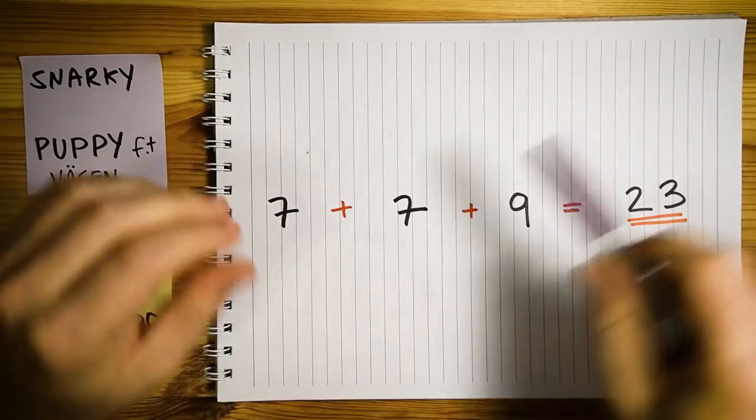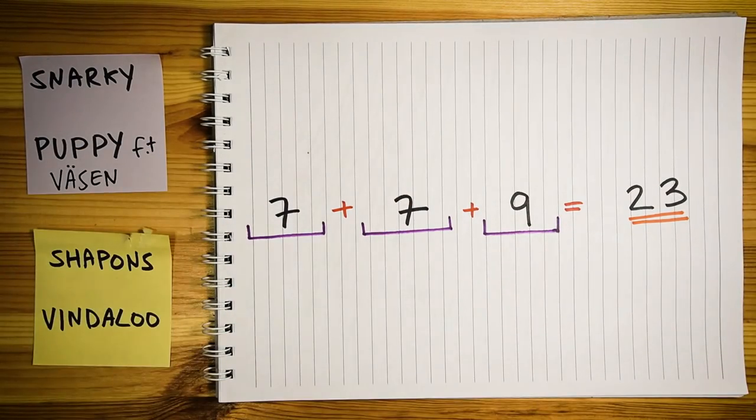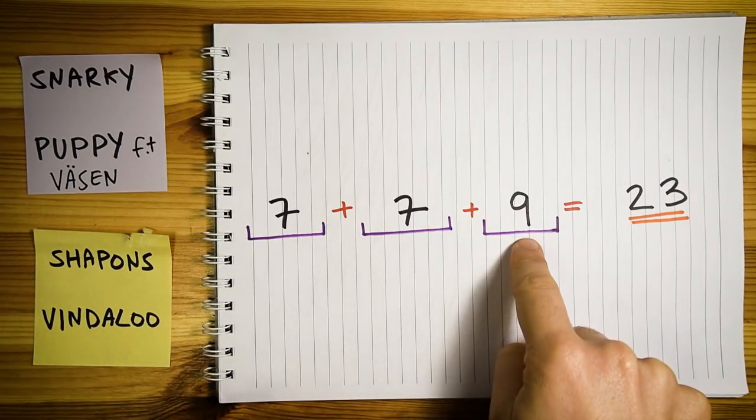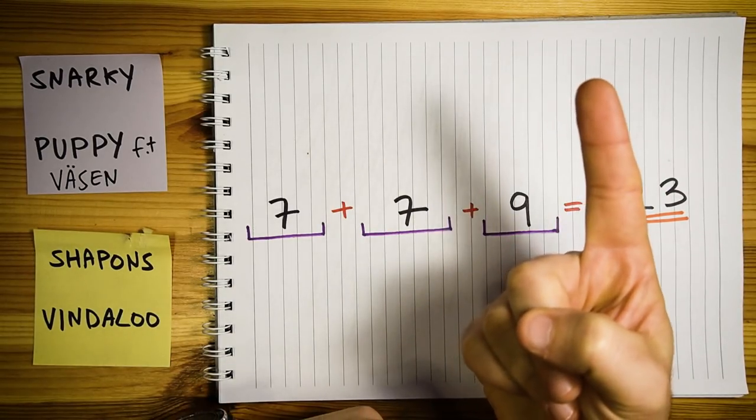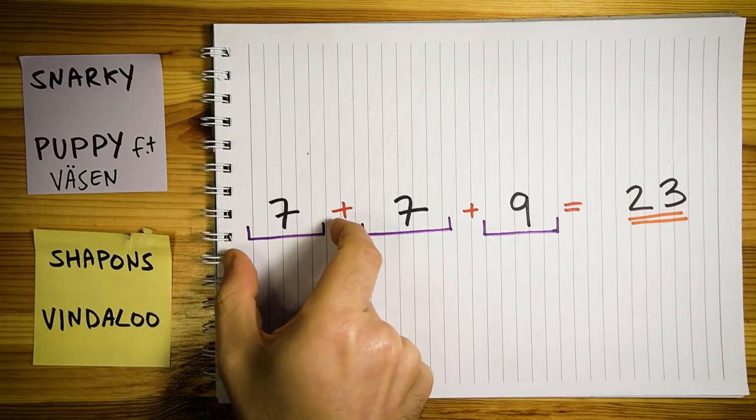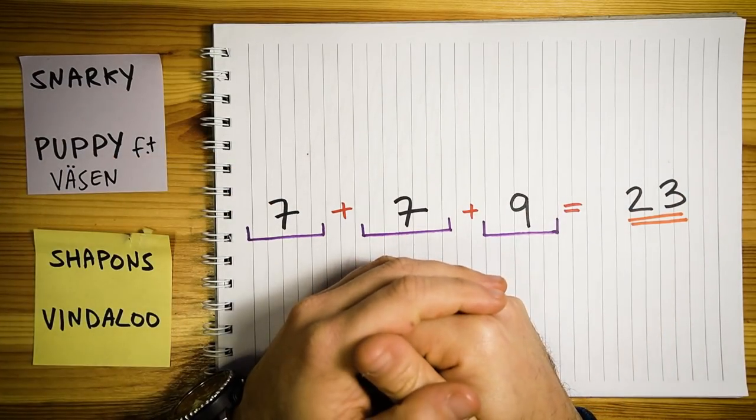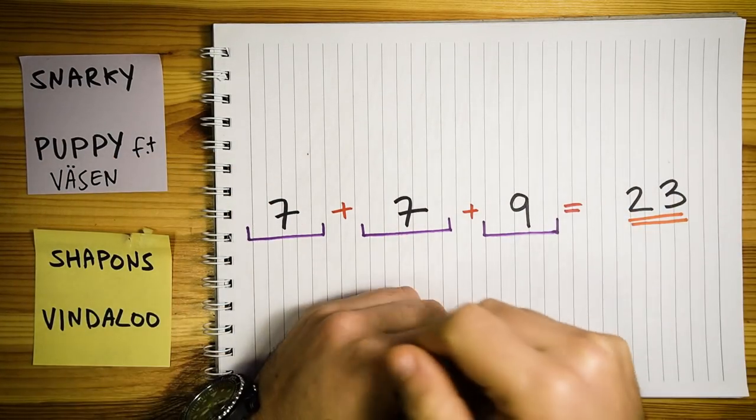So this composite time signature has three main centers. Calling this 23-beat cycle 779 does two things. First, it divides this huge number to chewable bite-sized pieces that you can digest, which provides a better overview of the inner works of the time signature.